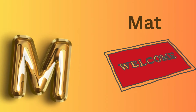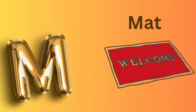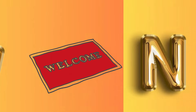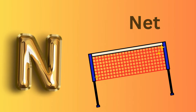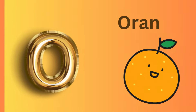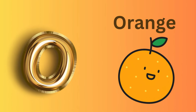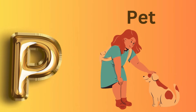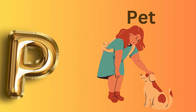M is for Mat, M-M-Mat. N is for Net, N-N-Net. O is for Orange, O-O-Orange. P is for Pet, P-P-Pet.